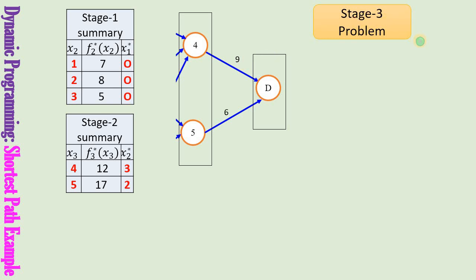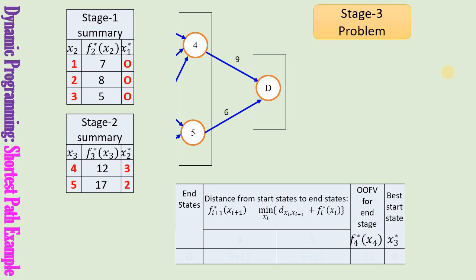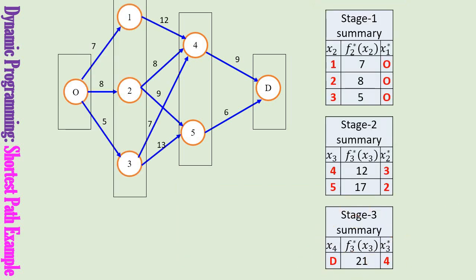We move to stage 3 problem. The shortest distance up to node 4 from the previous stage is 12 units, and up to node 5 is 17 units. In the current stage, going from 4 to D is 9 units and from 5 to D is 6 units. Therefore, the shortest path to reach node D is the minimum of 9+12 or 6+17, giving 21 units coming from node 4. Since we have 4 stages, stage 3 is the last stage problem, so we have found the shortest path from origin to destination.